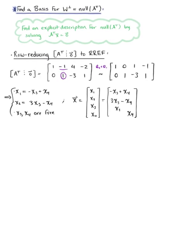So we can further decompose vector x and say that vector x is equal to the scalar multiple x sub 3 multiplied by the column vector negative 1, 3, 1, 0.